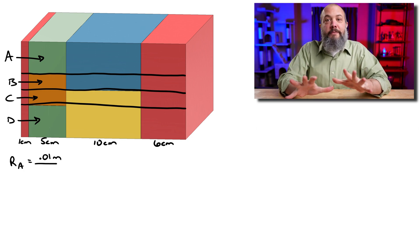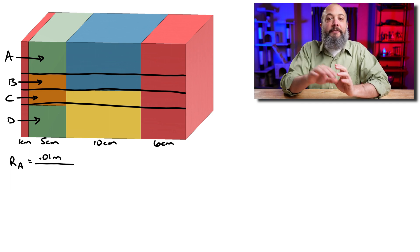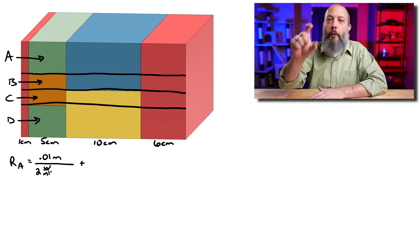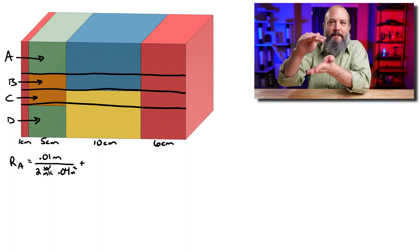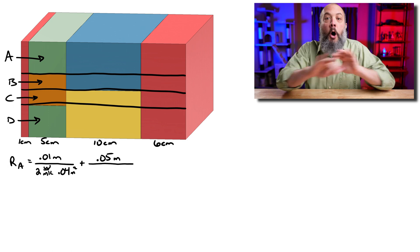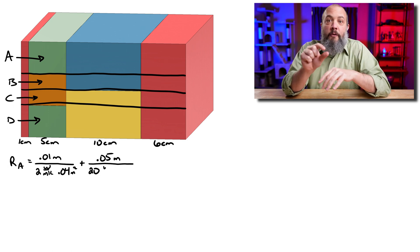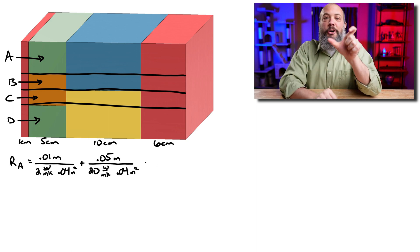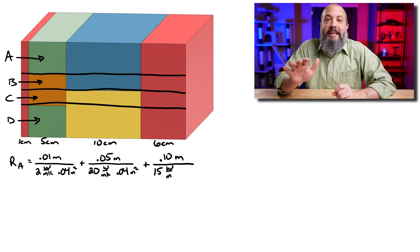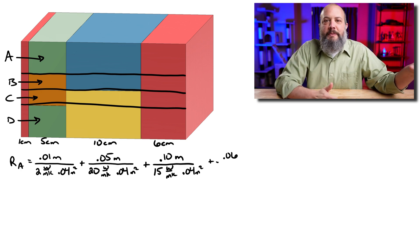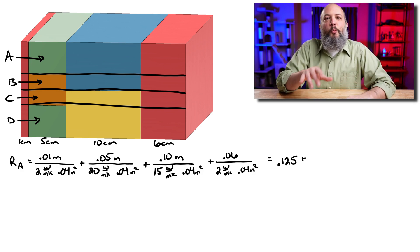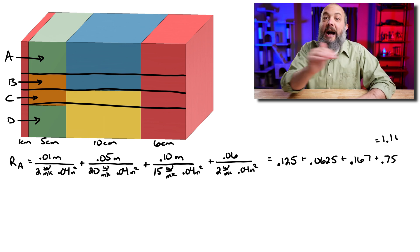R_A starts through the red section: length 1 cm, K = 2, area = 0.04 m² (the 4 cm height of section A times 1 m depth). As we write out resistance terms for green, blue, and the final red section, the surface area stays the same 0.04 m² throughout — only the horizontal length and K value change. Green has K = 20, blue has K = 15, and then the red section has K = 2, with section lengths of 1 cm, 5 cm, 10 cm, and 6 cm respectively. Adding those up gives R_A = 1.105 K/W.